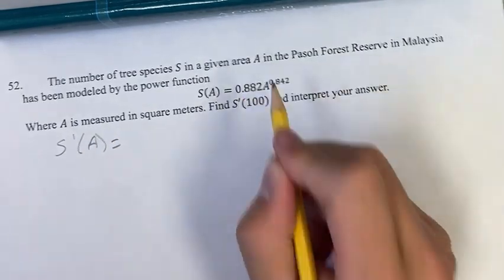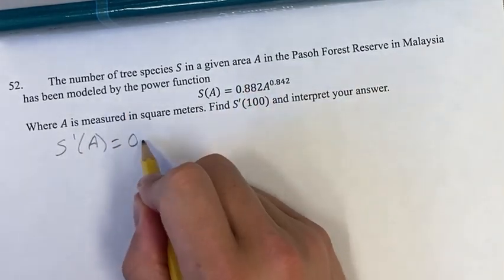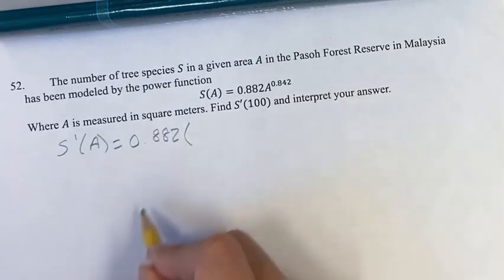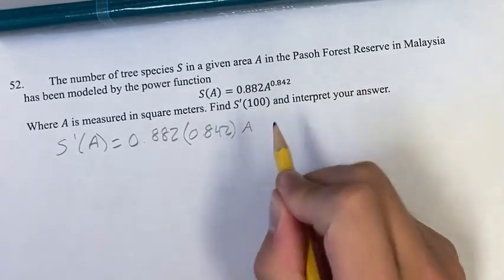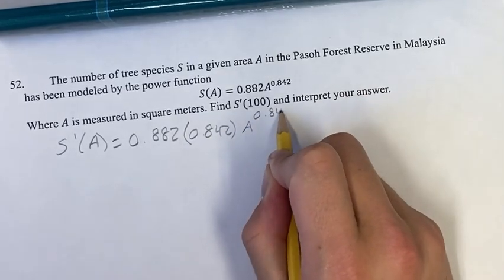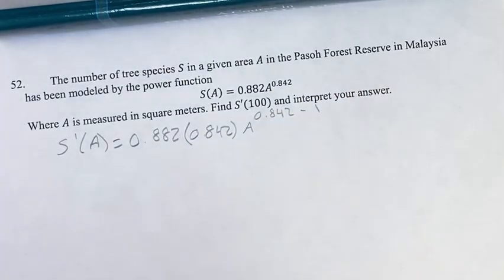And to do that with this power function, you take the coefficient and you bring that out first. You multiply it by your exponent. And then for your new exponent, it's the old one, it's your 0.842, minus 1.